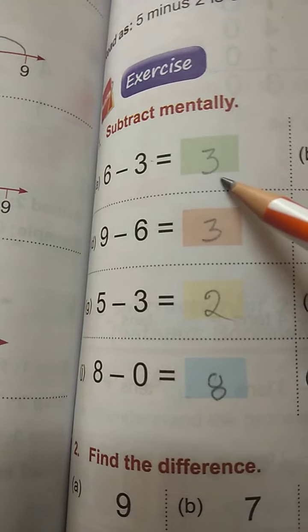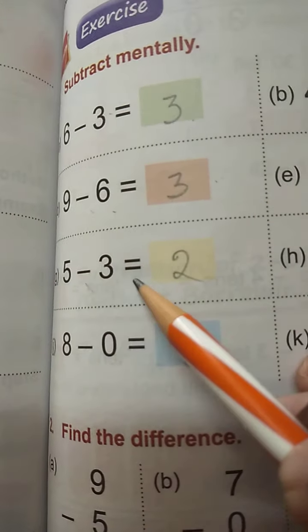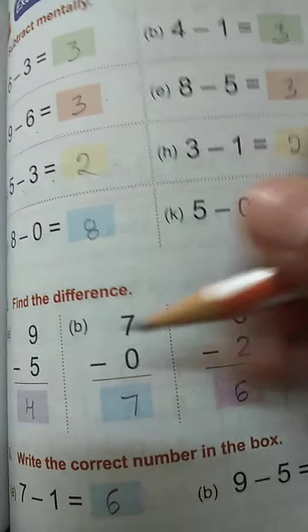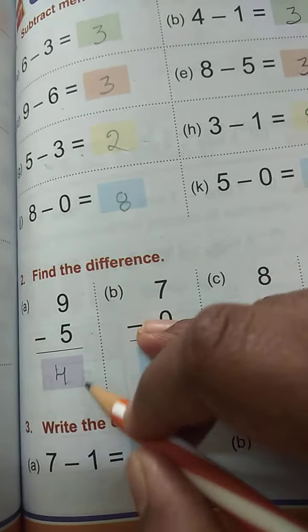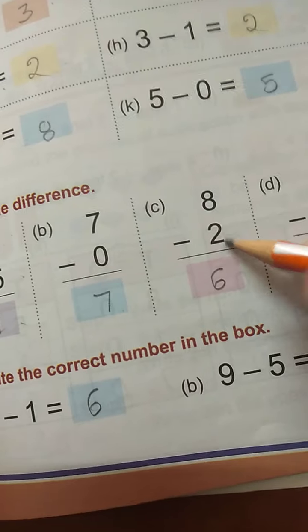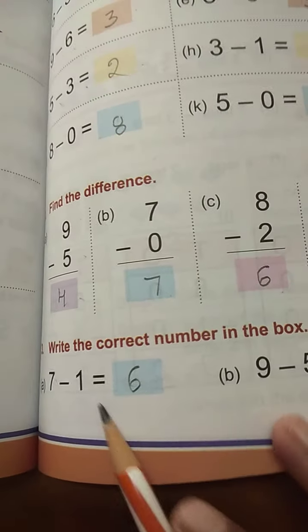Next, mentally subtract. 6 minus 3. 6 minus 3 is 3. 9 minus 6 is 3. 5 minus 2 is 2. So mental laggi. You can do it mentally. Exercise: Find the difference. So 9 minus 4. So 9 minus 5. So it is 4. 7 minus 0 is 7. 8 minus 2 is 6. 7 minus 1 is 6.